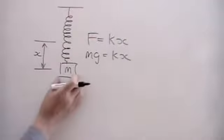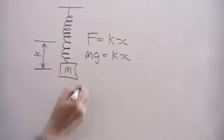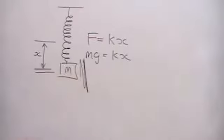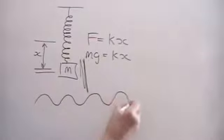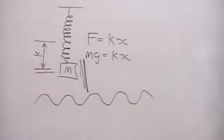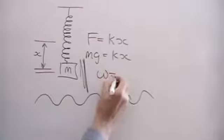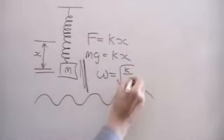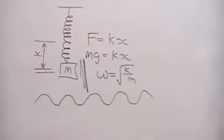Now, if I were to take this mass and pull it down a little bit and let go, then of course the spring is going to oscillate up and down about a mean position. And that oscillation will be a sine or cosine term — you get essentially the oscillation according to a sine or cosine wave pattern. And the frequency of that pattern, omega, is given by the square root of k over m, where k is the spring constant and m is the mass that is on the spring.